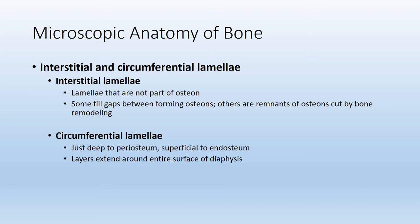Lamellae means layers or rings. However, interstitial and circumferential lamellae are not part of the immediate osteon. Interstitial lamellae — think 'in between' — are remnants of old osteons or the beginnings of bone remodeling or new osteons. The other type, circumferential lamellae, are layers just deep to the periosteum and make up the outer perimeter of compact bone.